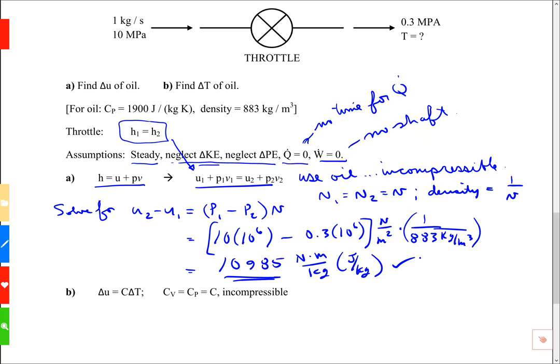Since we were asked for delta u. The temperature, part B, I'm going to find that by, for an incompressible fluid, the change in internal energy is the specific heat times the temperature change. And also, if it's incompressible, whether it's specific heat at constant volume or specific heat at constant pressure, it's the same value. So I could just call it C.